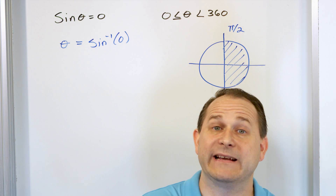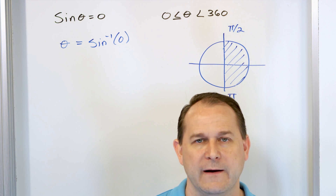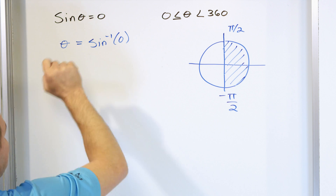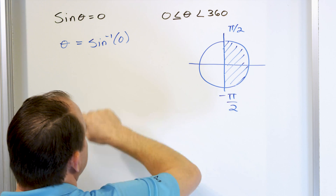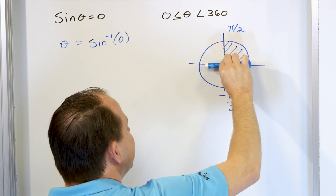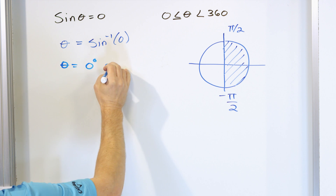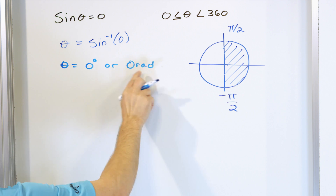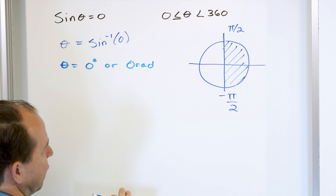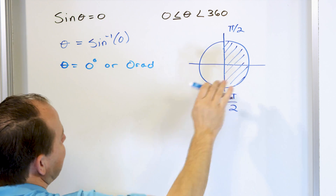Our problem says give me all angles between zero and 360 that satisfy this. So you find the basic angle that works, then check if there are any additional angles around the unit circle that also work. What angle gives a sine of zero? At zero degrees, the sine is the projection onto the y-axis — there is no projection, so the sine of zero is zero. So theta can be zero degrees or zero radians. That is the angle the calculator gives back; it's right in the middle of the range from negative pi over 2 to pi over 2.